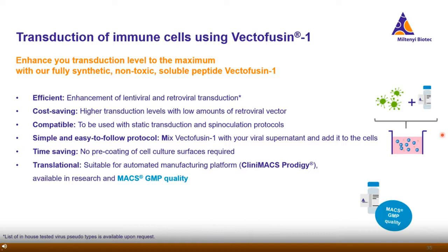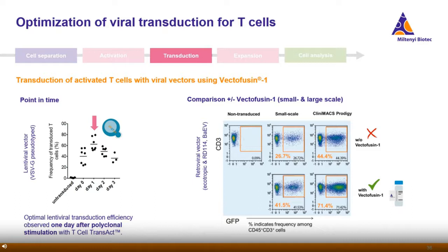The next point after activation and expansion is transduction — how do you get your gene of interest into your cells? We have developed VectorFusin-1, a viral transduction enhancer that helps you get more virus into your cells. It is completely synthetic, non-toxic, and a soluble peptide. Forget about coating plates with retronectin — you can just mix your virus with VectorFusin-1 and add it to your cell suspension. VectorFusin-1 is available in both research and clinical grade.